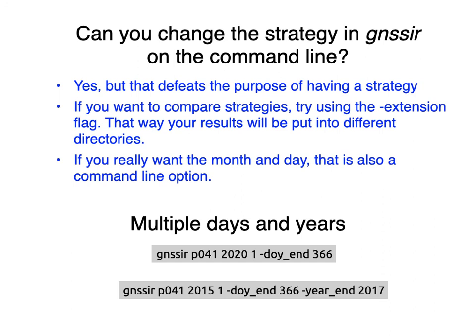People ask if you can change your strategy on the command line — yes, but that defeats the purpose of having a strategy. If you want to compare strategies, I encourage you to use the extension flag. For example, you could have two JSONs: one with elevation angles 5 to 20 and another with 5 to 15, completely segregating the outputs to compare them. You can also save month and day to the output file, which was requested by a user comparing to tide gauge data. On the command line you can also analyze an entire year of data, or even three years of data with a single line.